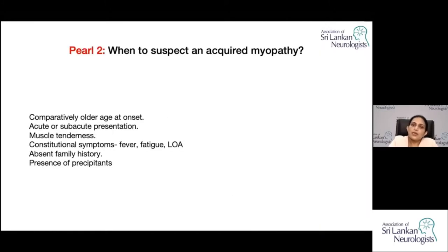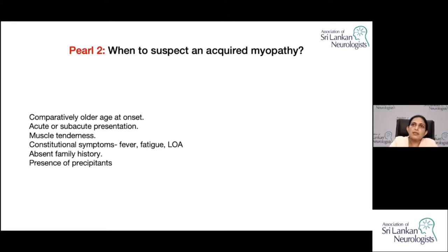When to suspect an acquired myopathy: when a patient presents at a fairly older age, with either an acute presentation, muscle tenderness, lots of constitutional symptoms like fever, loss of appetite, fatigue, and ill health, when there is no family history, and when there is an identifiable precipitant — you should always look for an acquired myopathy.